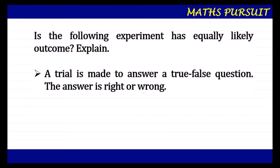So definitely if we toss a coin, the probability of getting a head or getting a tail is equally likely to happen. You may end up getting a tail or you may end up getting a head. Similarly, wherever two things are involved, the probability of the outcome is going to have equally likely outcomes.